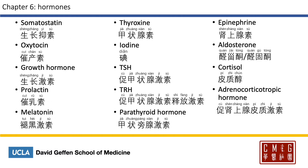To say somatostatin, it will be 生长抑素, 抑 meaning to inhibit. Oxytocin will be 催产素 — 催 meaning to accelerate, and 产 is the abbreviation of 生产, which means delivery. Growth hormone is 生长激素. Prolactin will be 催乳素. Melatonin will be 褪黑激素.